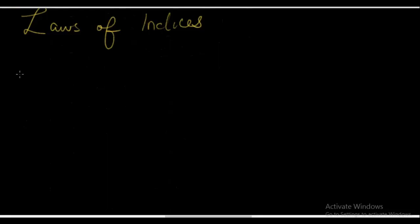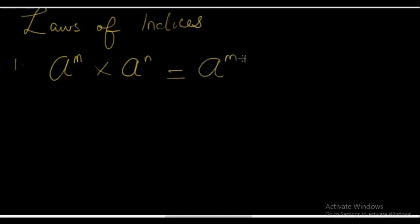Law number 1: A raised to the power M, multiplied by A raised to the power N, is equal to A raised to the power M plus N. That is rule number 1. Notice what we've done to the indices when you multiply. During multiplication, or when performing a multiplication operation, you simply add up the indices.